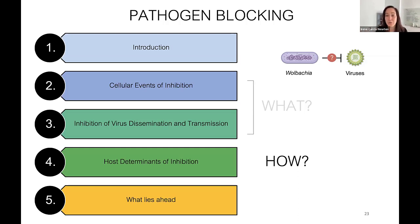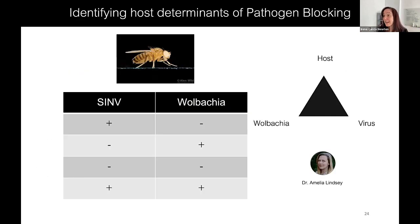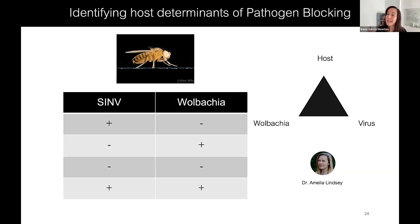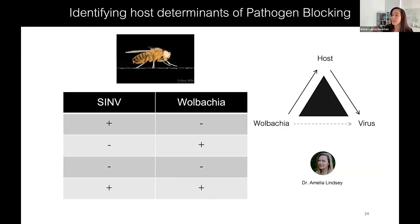How does Wolbachia actually do this? One way of trying to get at the host determinants involved in this inhibition is by large-scale RNA-seq. Dr. Amelia Lindsay, when she was a postdoc in the lab, took on this project. We had a block design with and without Sinbus, with and without Wolbachia, all in the same genetic background of fruit fly, asking what are the ways in which the Wolbachia infection might limit the virus.